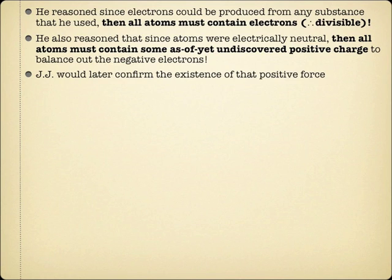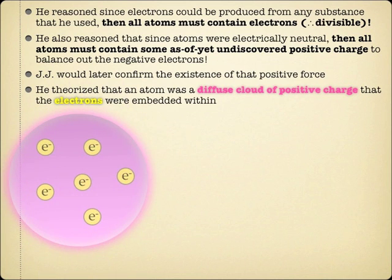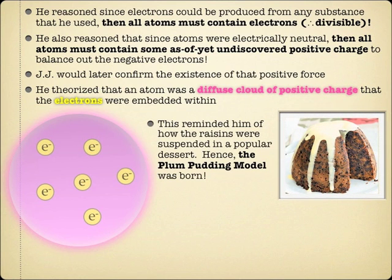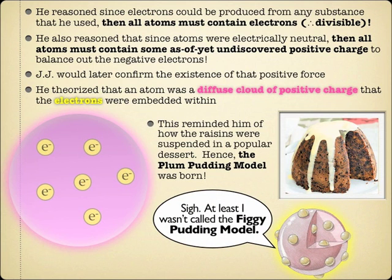J.J. Thompson came up with a model of the atom to reflect the idea that you could get electrons out of it — something called the plum pudding model. We don't really eat much plum pudding nowadays except around the holidays — we call it figgy pudding in the carols. The idea was that inside this ball of dough were raisins suspended. Atoms are sort of like this: the electrons are like raisins embedded inside the dough. If we discovered this today, we might call it the grapes and Jello model, with the grapes being the electrons suspended in the hazy positive charge.